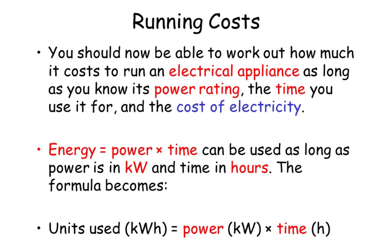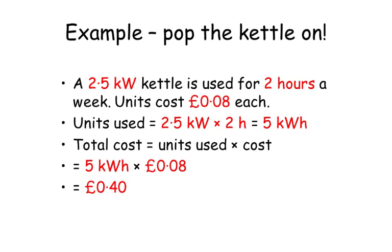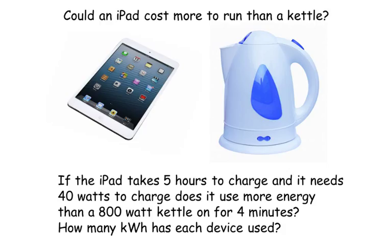Example: a 2.5 kilowatt kettle is used for two hours a week and the cost of a unit is £0.08. The total units used are 2.5 kilowatts times 2 hours, giving 5 kilowatt hours. The total cost is units used times cost per unit: 5 × 0.08 = 40 pence.